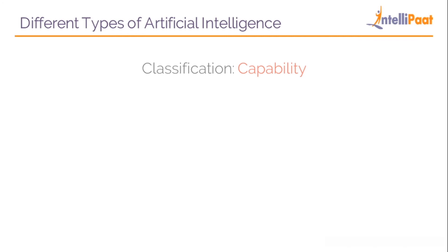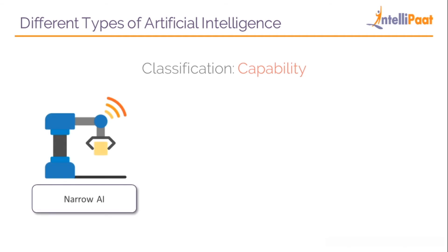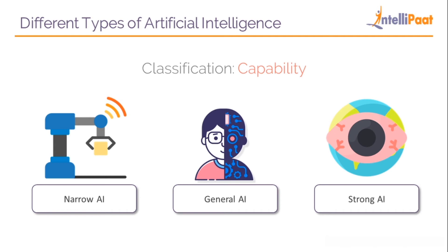We have different classifications based on capability: narrow AI, general AI, and strong AI. Narrow AI can also be called weak AI — it's a type of AI used for only one narrow task, performing a very simple task. It is the most common and currently where AI is being used the most. Examples include self-driving cars, chess-playing machines, image recognition, speech recognition, and purchasing suggestions on e-commerce sites.